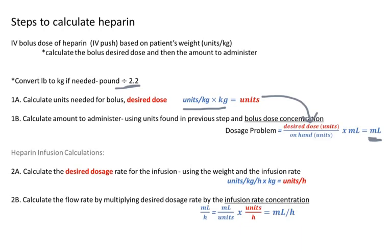After the bolus is given — that's immediate, you give it, he's received it — you're then going to set the infusion to keep the patient receiving steady amounts of heparin on a continuous basis. That's when we talk about infusions. The first step is again to multiply by the patient's weight, because it's given in units per kilogram per hour. Multiply by kilograms to get units per hour, then solve for milliliters per hour to set the infusion pump.